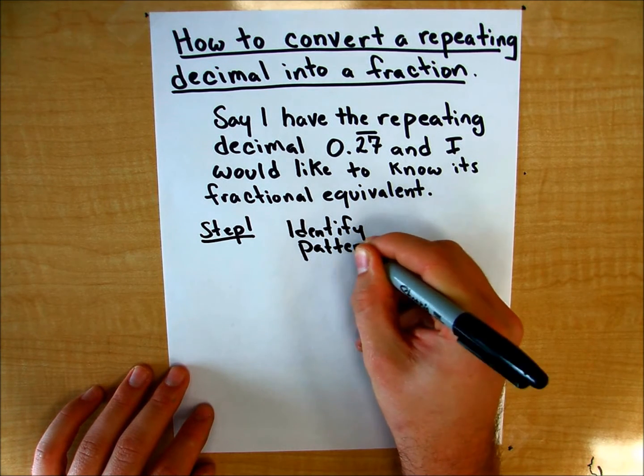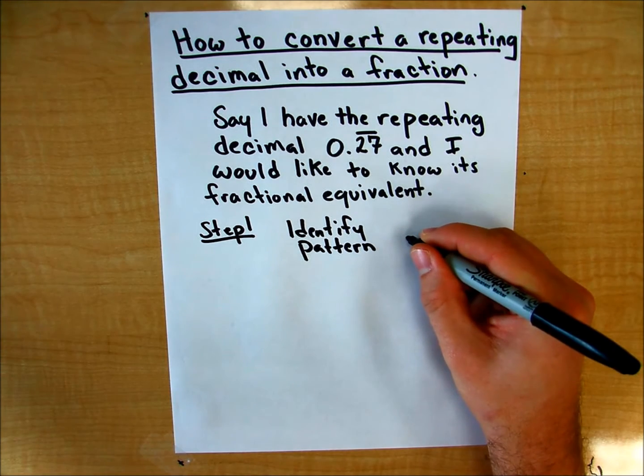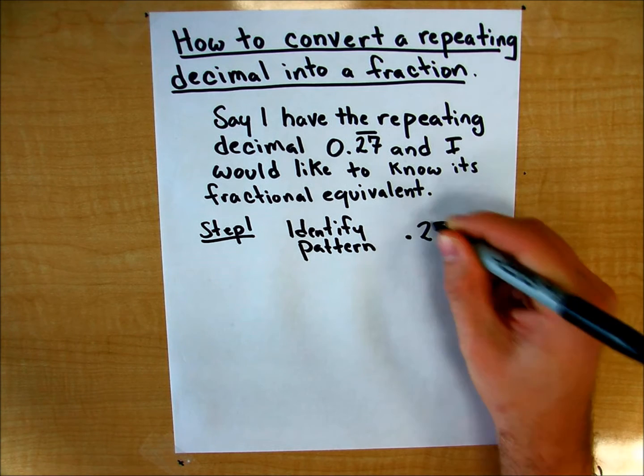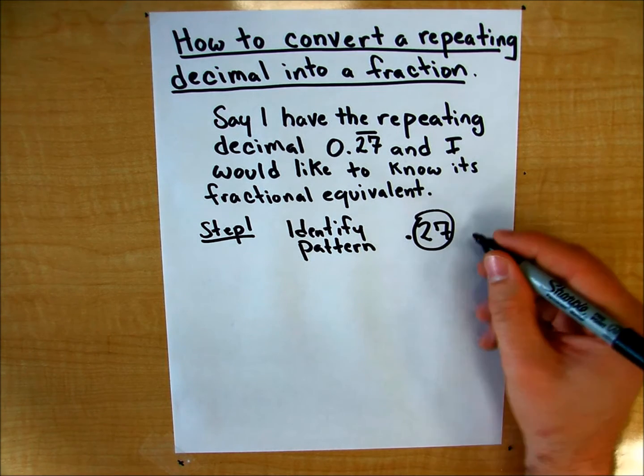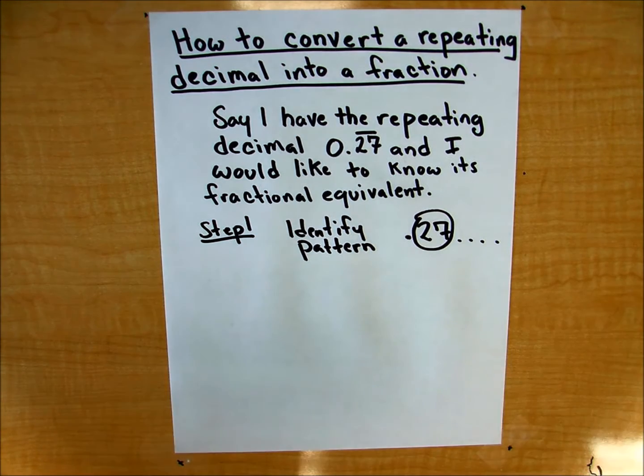In this case, our pattern is this 2.7, right? That is the part of this number that is going to be repeated over and over again.